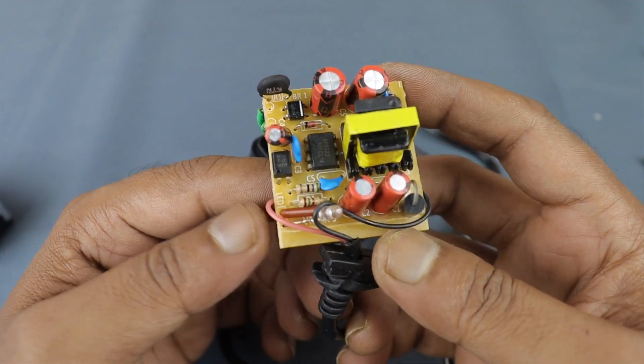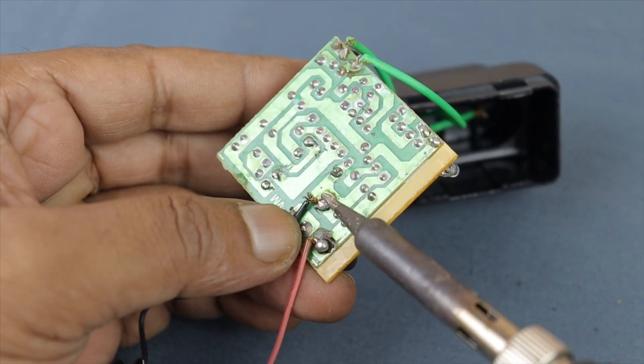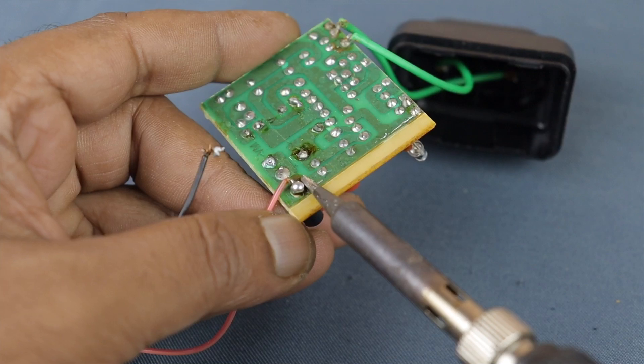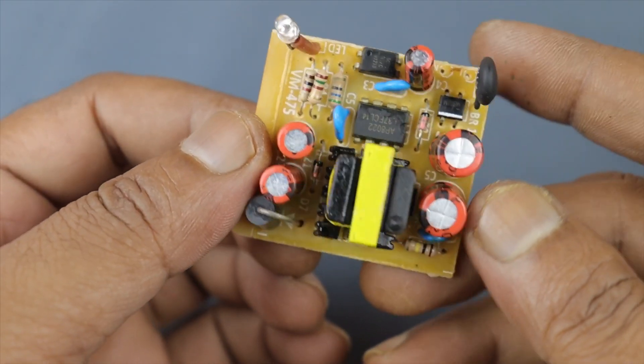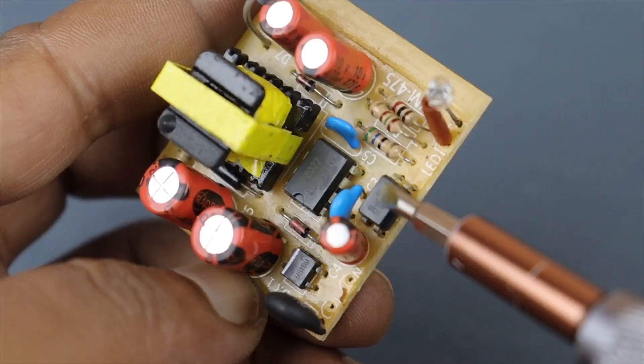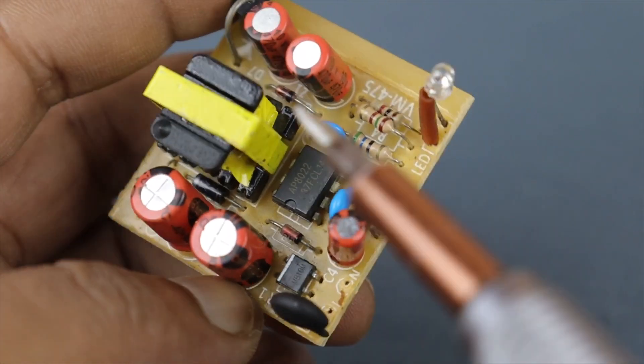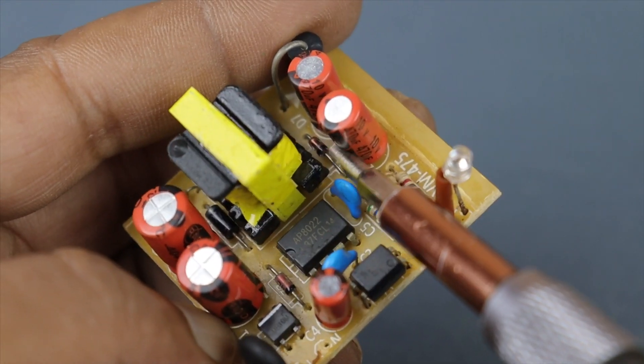If you want to make an adapter's voltage adjustable, then the circuit must have an opto-coupler, because without the opto-coupler the output voltage control is very complex. Here you can see the opto-coupler and here is the Zener diode which controls the output voltage.